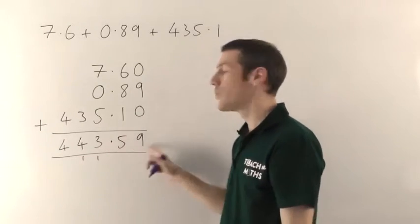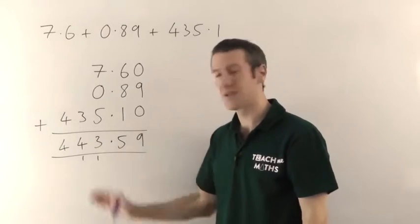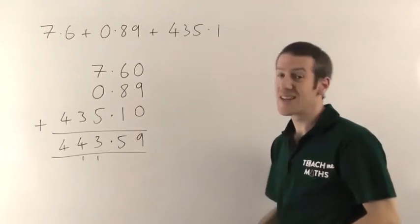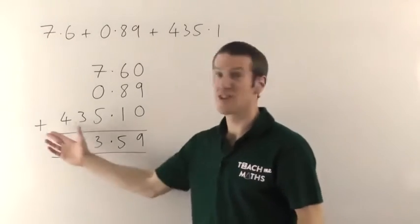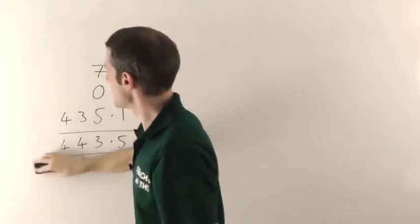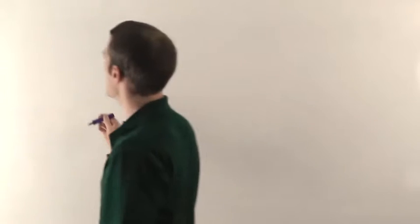Just line it all up correctly with the columns and you won't go wrong. That's addition. Subtraction is exactly the same except you just subtract instead of add. I'll show you an example quickly, but it really is no different.